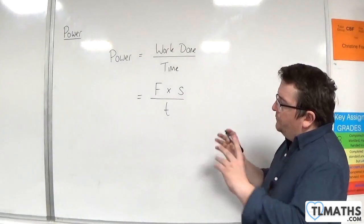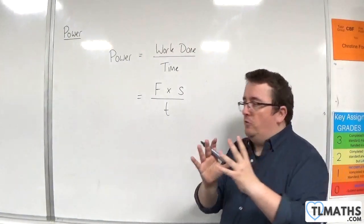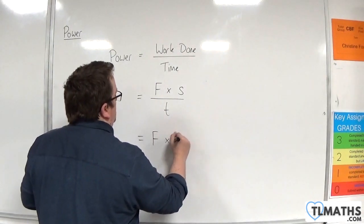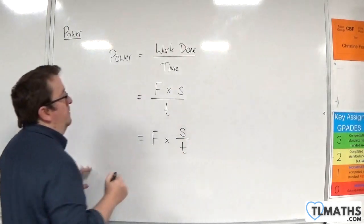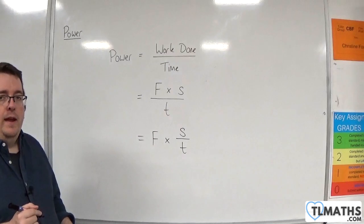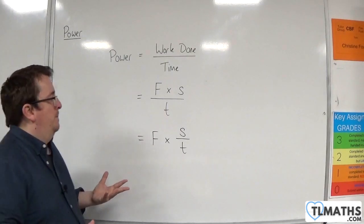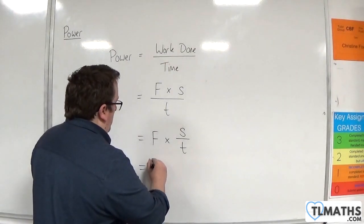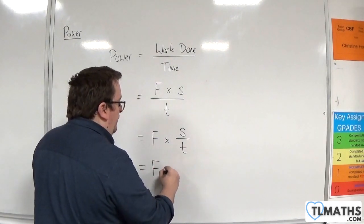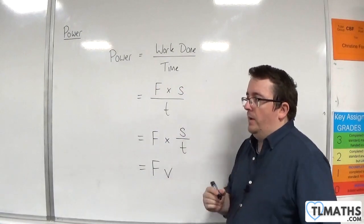Now, we can break that fraction up and rewrite it as force times distance over time. Now, of course, distance over time is just velocity. So, power is also force times velocity.